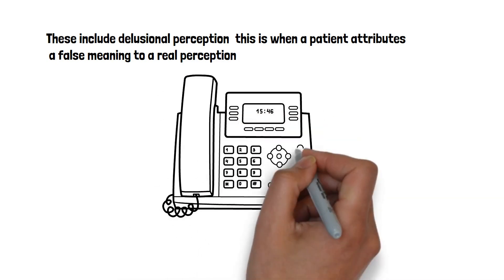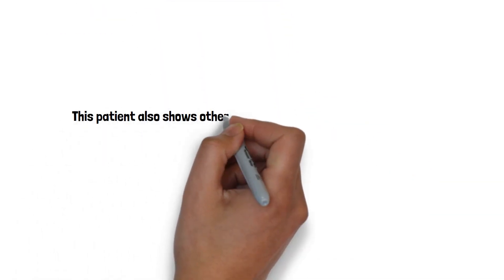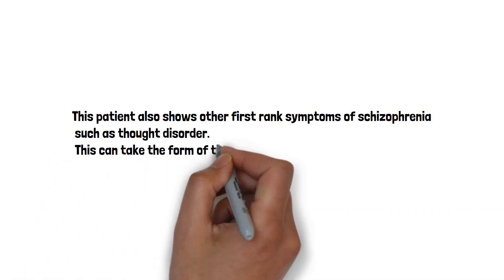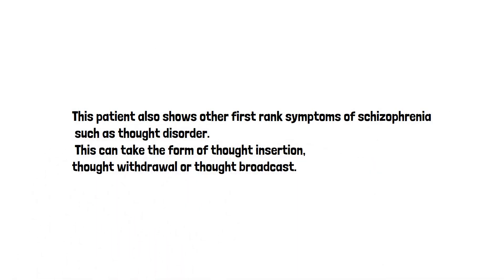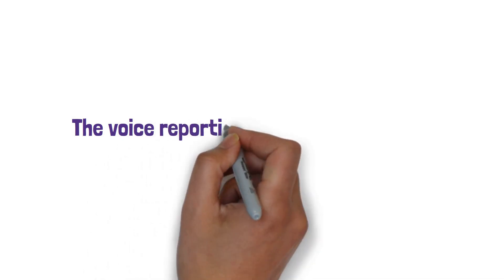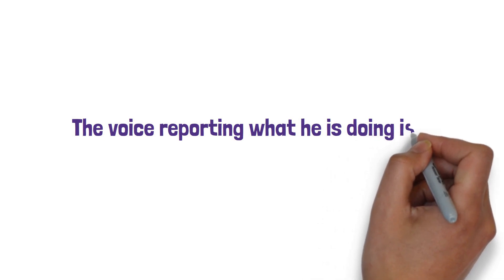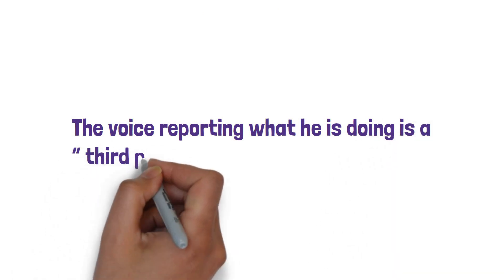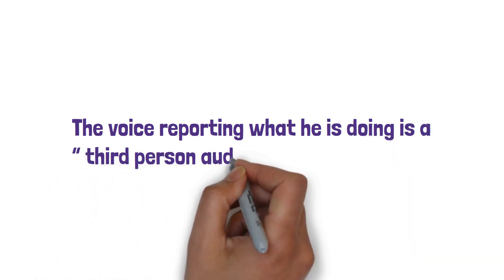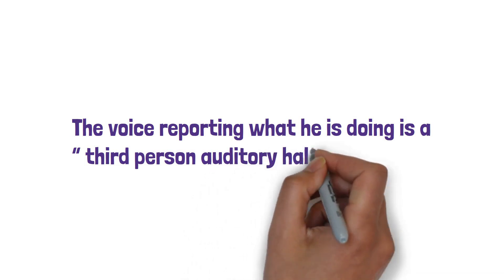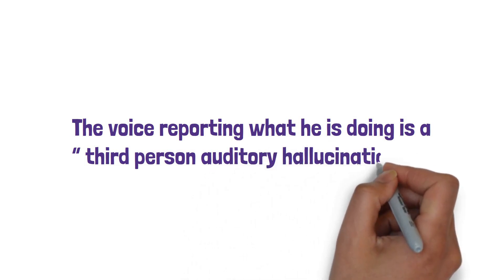This patient also shows other first rank features of schizophrenia, such as thought disorder. This can take the form of thought insertion, thought withdrawal or thought broadcast. And this gentleman feels his thoughts are being broadcast to other people. He also has heard a voice and what he is experiencing here is third person auditory hallucination, another key feature of schizophrenia.